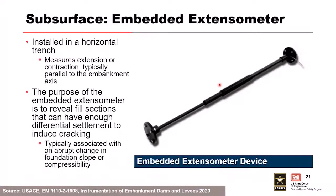Embedded extensometers provide a more focused, localized look at movements. They're installed in a horizontal trench and measure extension or contraction, typically installed parallel to the embankment axis. Their purpose is to reveal fill sections that have experienced enough differential settlement to potentially induce cracking. These may be installed where a foundation slope changes abruptly or where compressible material exists and differential settlement is a concern.